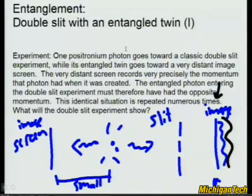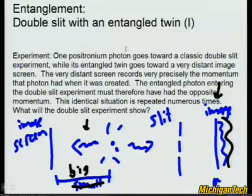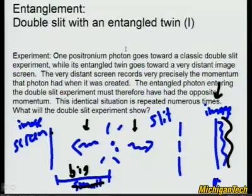Now let's go around again. One positronium photon goes toward a classic double-slit experiment, just like before, but now the entangled twin goes to a very distant image screen — well across the hall, down the hall, next building, across campus, on the moon. Once this image screen is far enough away, shouldn't you be able to tell where this photon is going? And then you say, this photon has the opposite momentum — therefore I'm going to know which slit it went through. Whenever it hits the distant screen, that means on the other side the photon went through that slit. So even though there's an interference pattern there, I'll have beaten it: I'll know which slit each photon went through. Does this work?